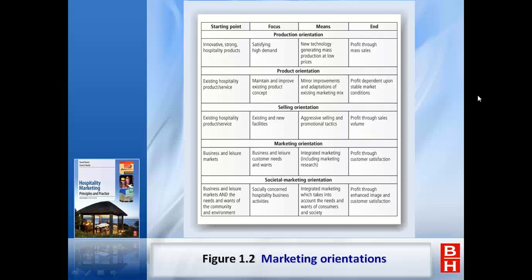Then comes the selling concept — existing products and services, existing and new facilities, with aggressive selling. Promote hard: 'This week is the last week sale.' Like in the UK, Sports Direct has for many years offered 75% promotion — aggressive selling and promotion. They try to hire students under 25 to pay lower wages, aggressively saving and focusing on profit. So profit through sales volume — that was the emphasis in the selling concept.